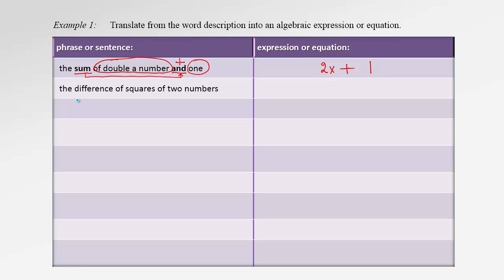Next: 'the difference of squares of two numbers.' Difference is the key word, so we place a minus sign. We need two numbers — let's call them x and y. It's not just a difference of the two numbers; it's the difference of their squares. So we square x, square y, and subtract: x² − y².